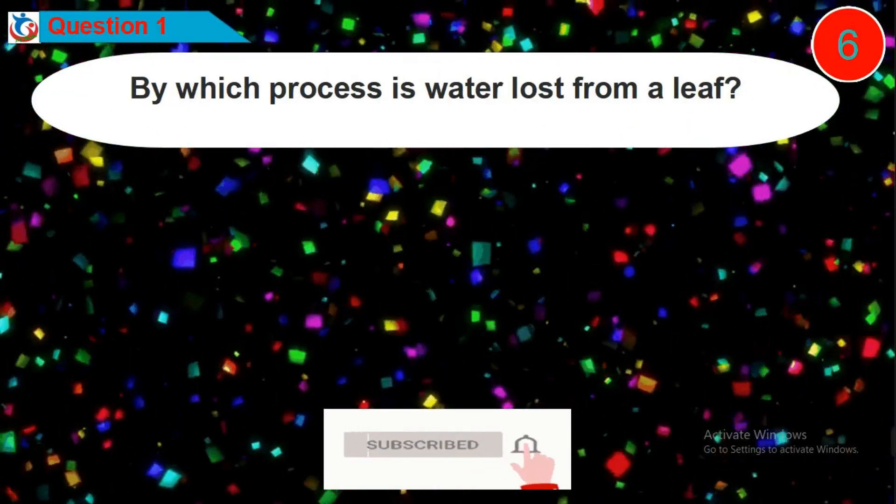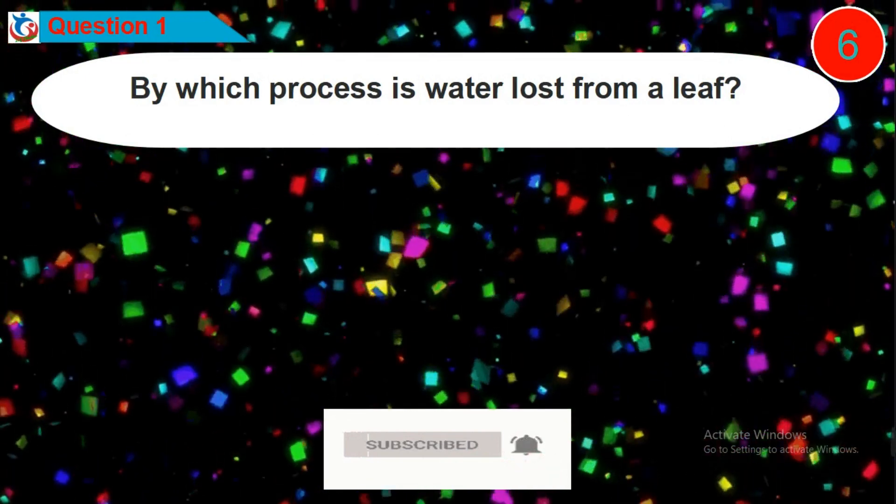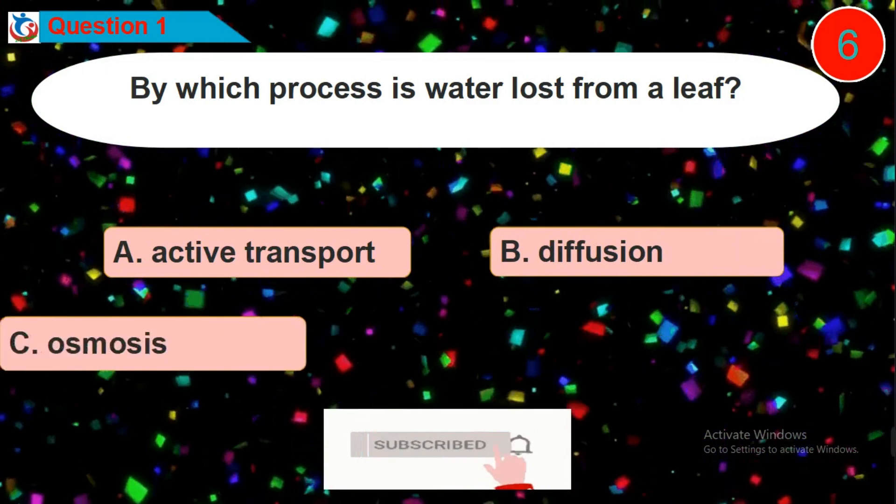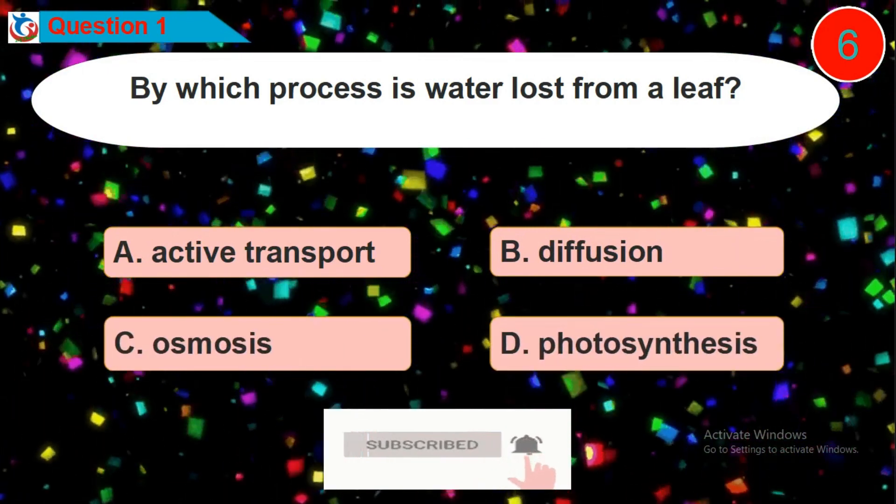Question 1. By which process is water lost from a leaf? Is it option A, B, C or D?